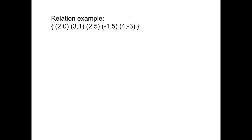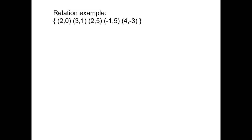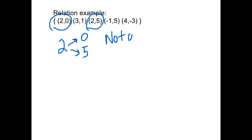Here's that relation example. You'll notice — I'll draw on that — those two points: 2 is paired with both 0 and 5. So this is not a function. It's a relation but not a function. All it takes is one exception. Everything else was fine: 3 was only paired with one y-value, -1 is only paired with one, and 4 is only paired with one. But it only took this one break in the pattern to make this not a function.